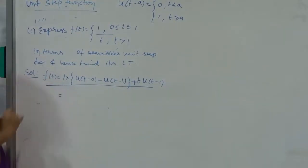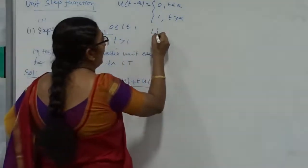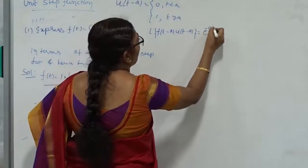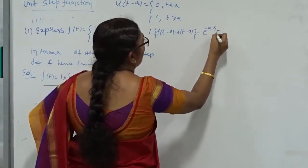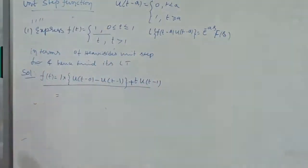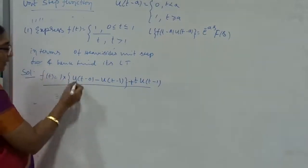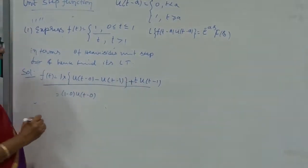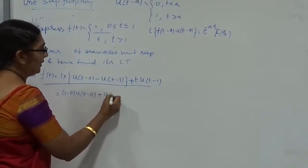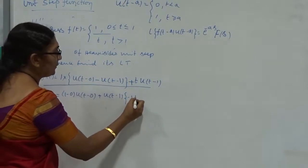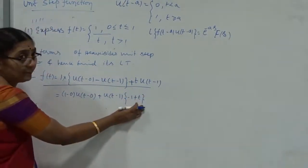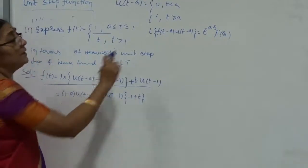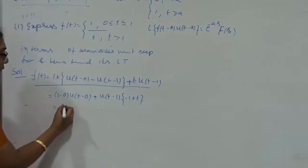After expressing in terms of the unit step function, we want to find the Laplace transform. But to apply the formula, we need to express everything in the form F(T minus A) into U(T minus A). We know the formula: Laplace transform of F(T minus A) into U(T minus A) equals e to the power of minus AS into capital F of S. Now, 1 can be written as 1 minus 0, and we group the T minus 1 terms. The common factor is T minus 1, and the remaining factor is minus 1 plus T.